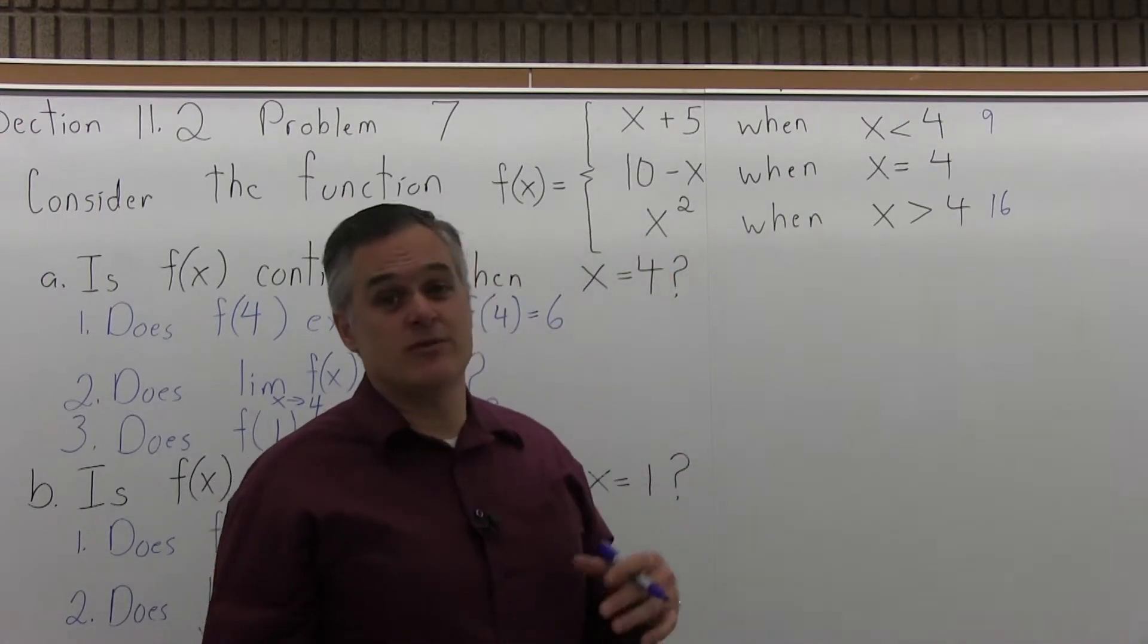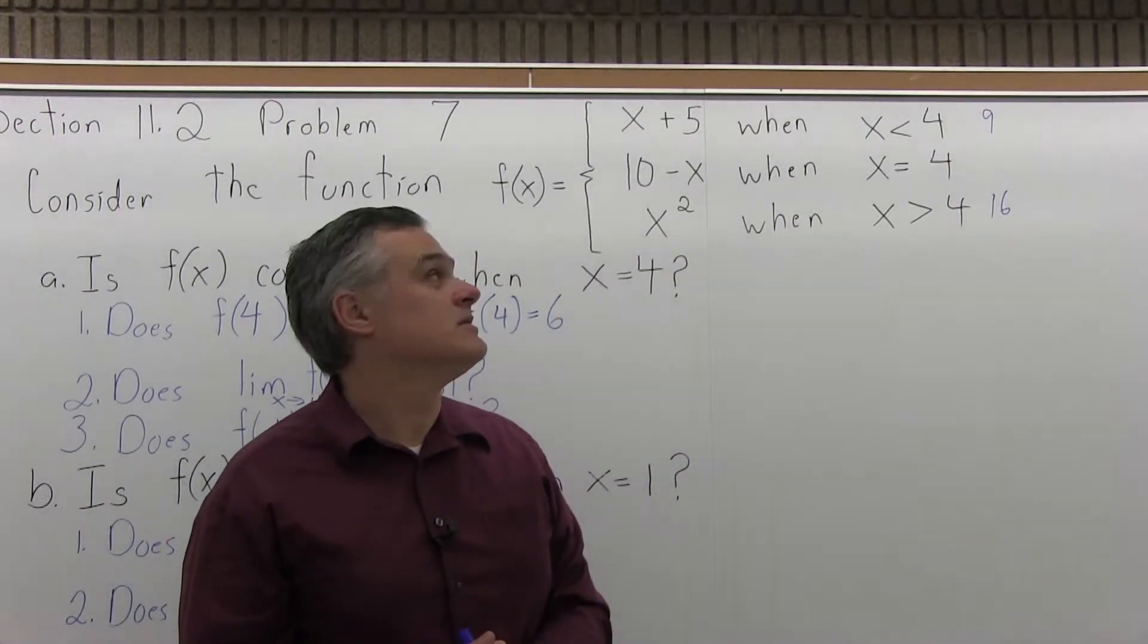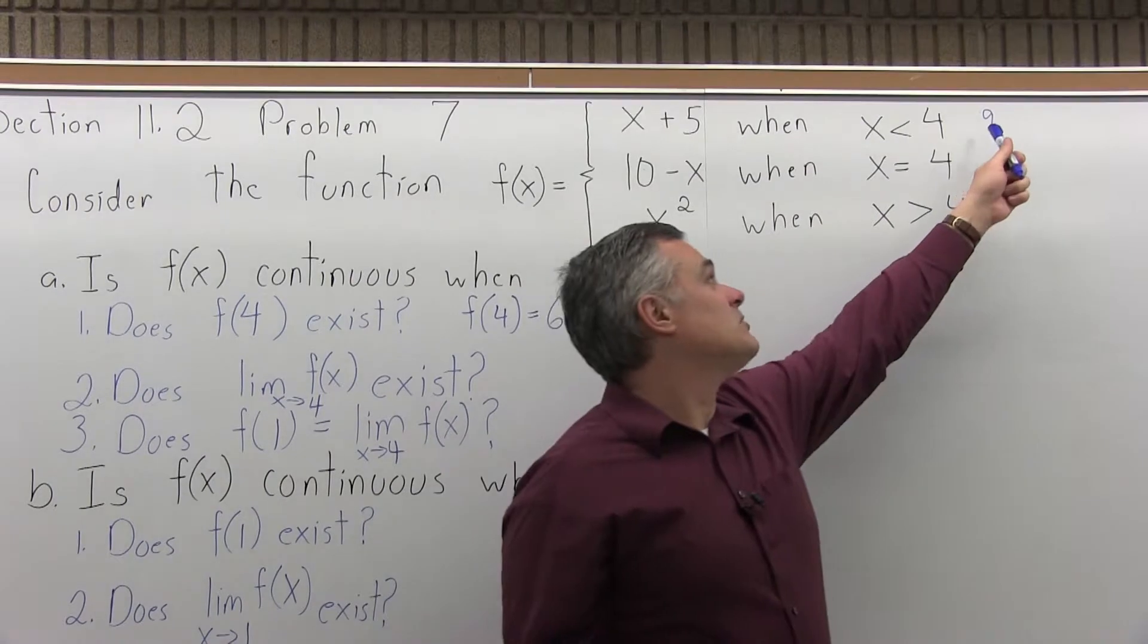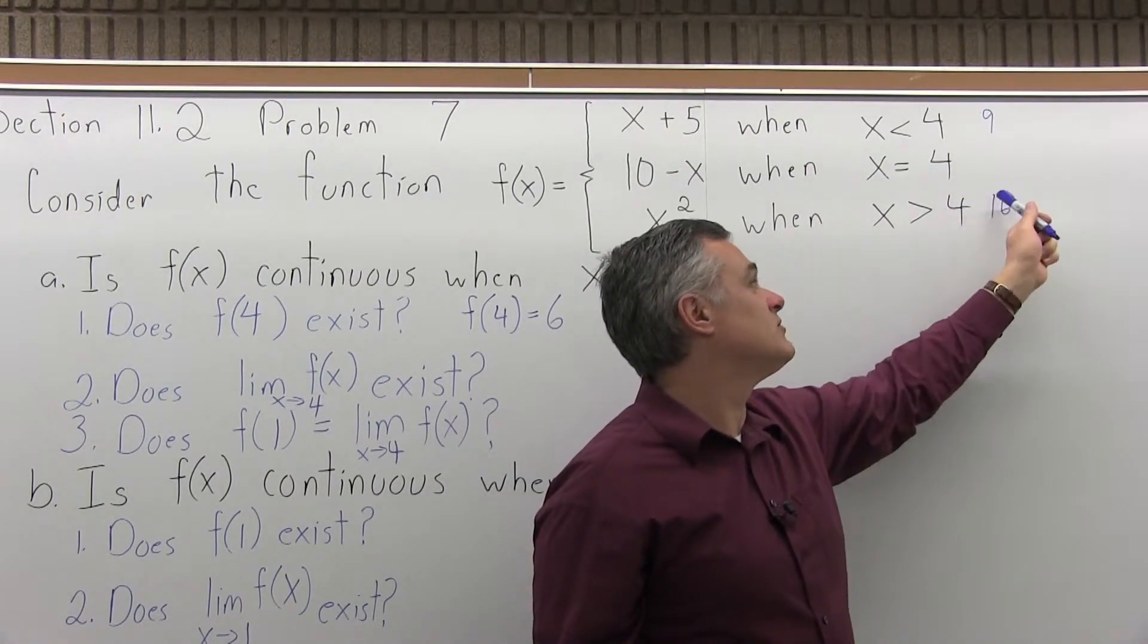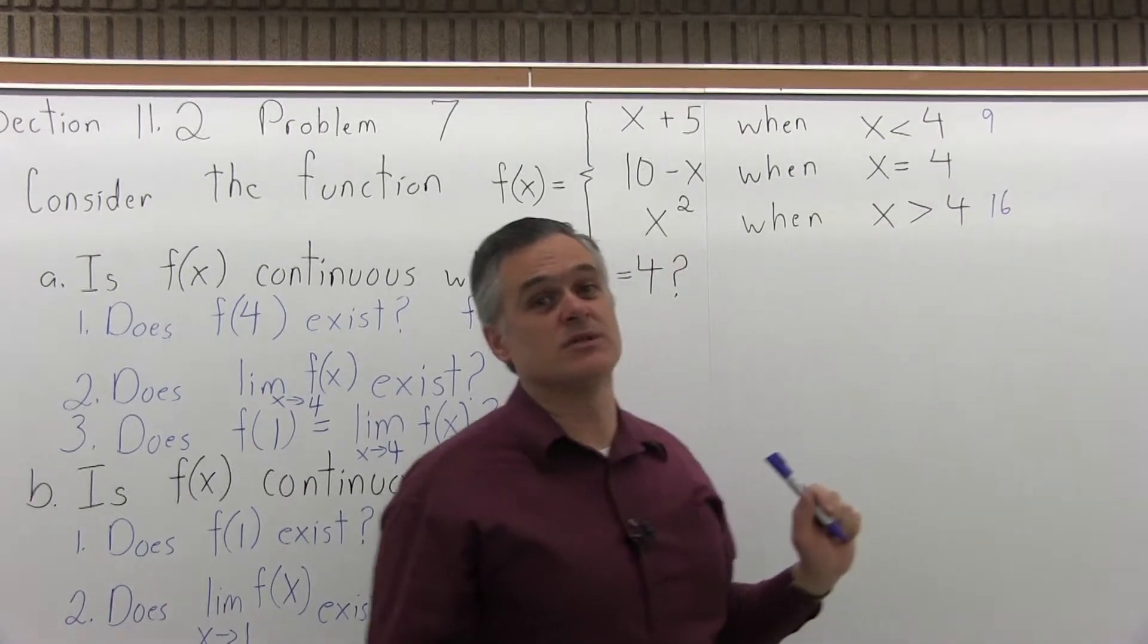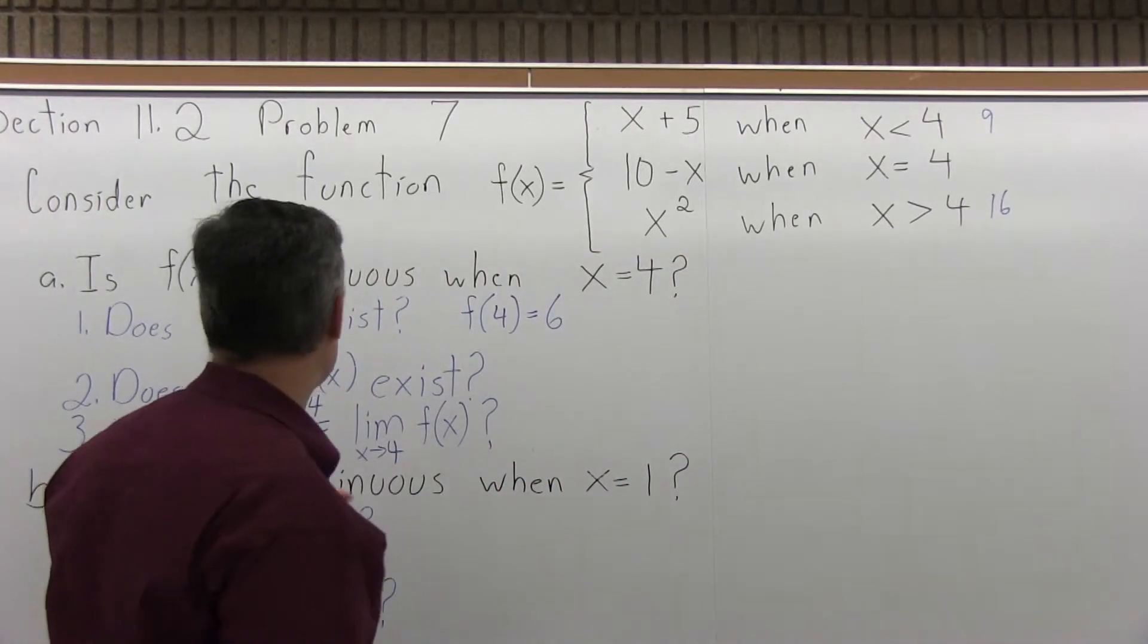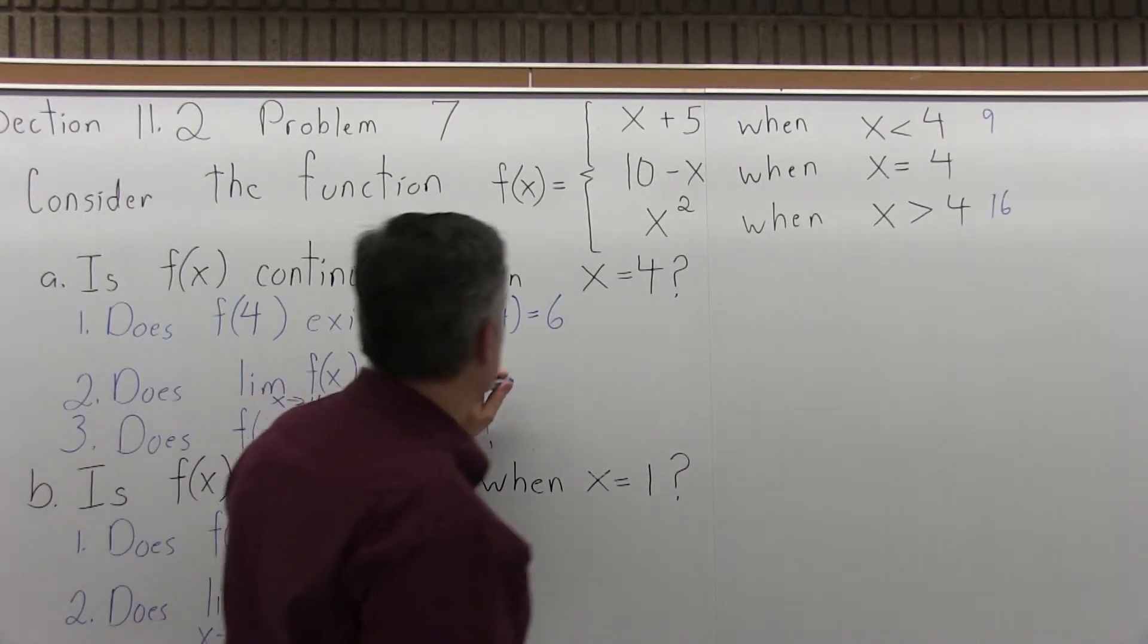Now, they're going to two different things, so the limit does not exist. When I put in values slightly smaller than 4, I'm getting an output that's close to 9. Input values slightly larger than 4, I'm getting an output that's close to 16, so the limit does not exist.